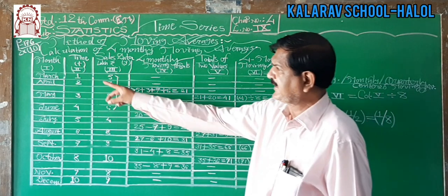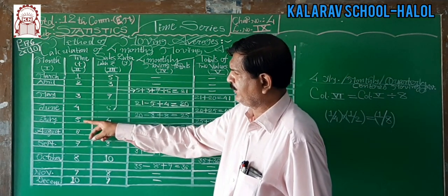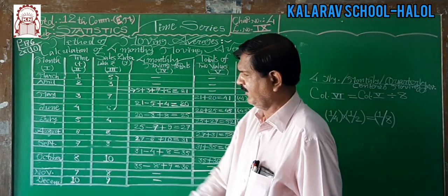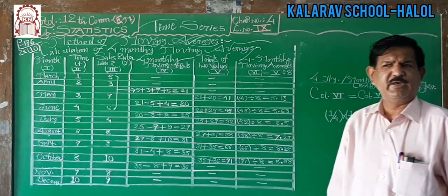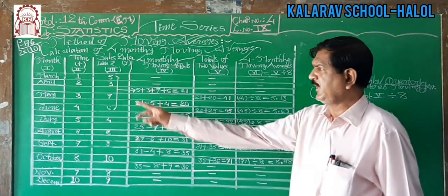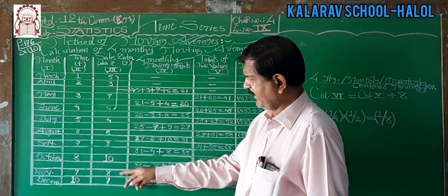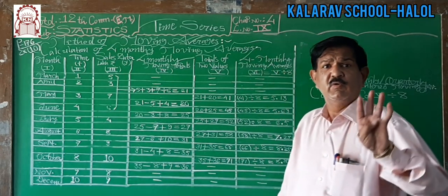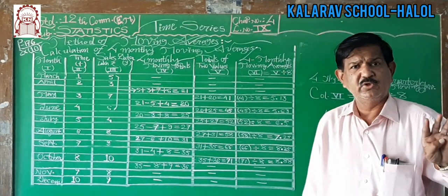The months are: first, second, third, fourth, fifth, sixth, seventh, eighth, ninth, tenth. The respective data values are: 5, 3, 7, 6, 4, 8, 9, 10, 8, 9.